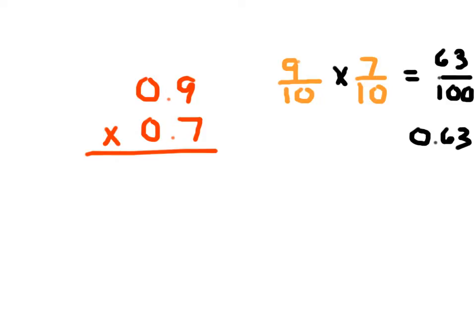I'm showing you why the method works, but if you don't want to do all that work, you simply multiply 7 times 9 to get 63. Since there are two decimal places in the problem — one here and one there — you must have two decimal places in your answer. That's why we place the decimal point there and put a 0 in front of it.